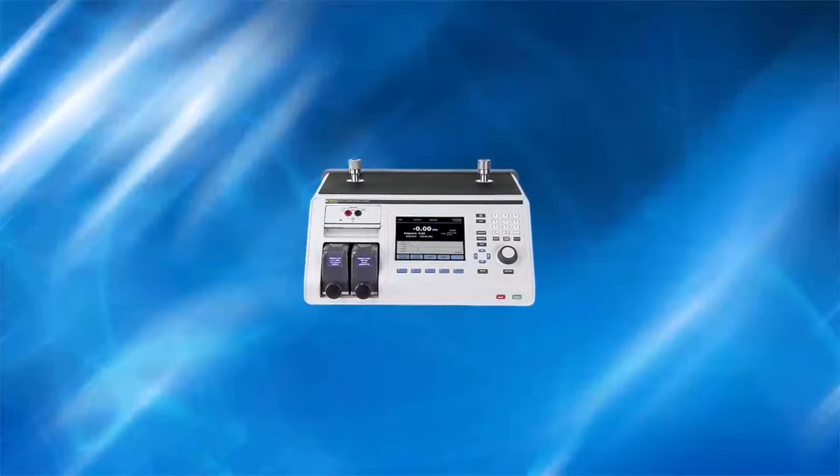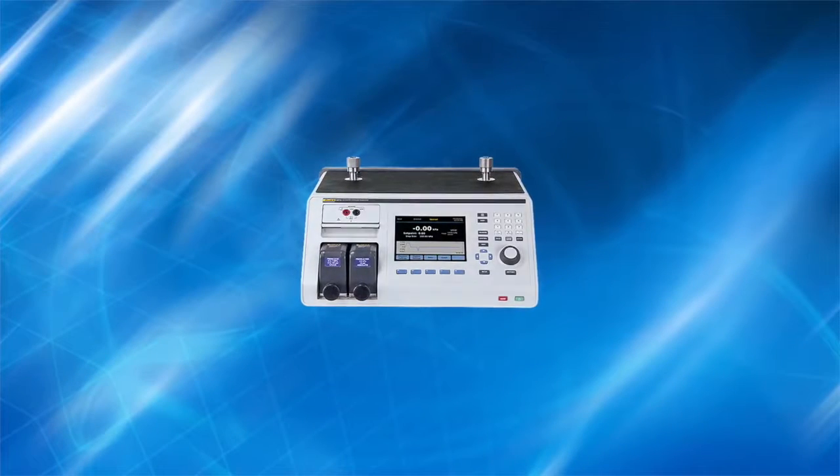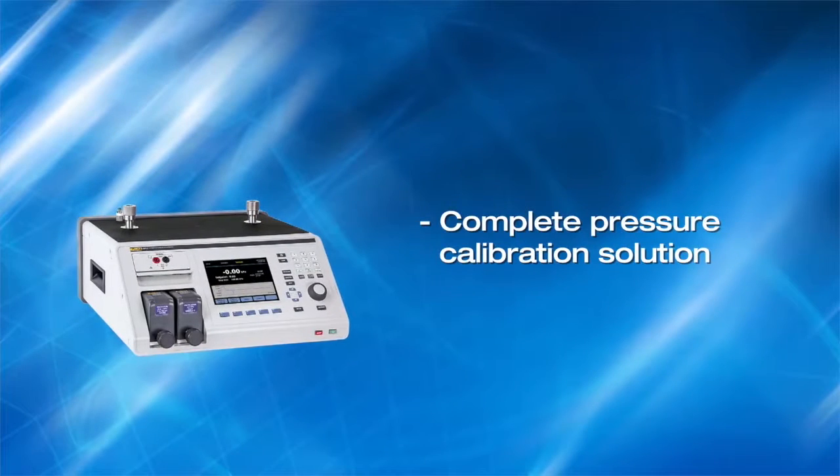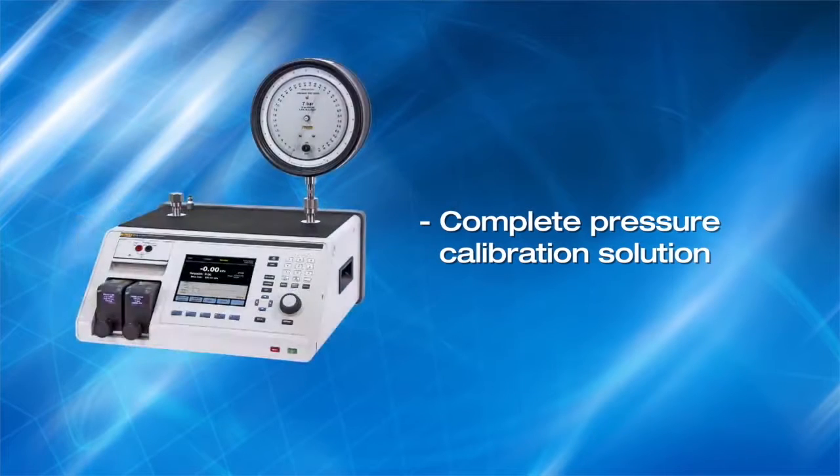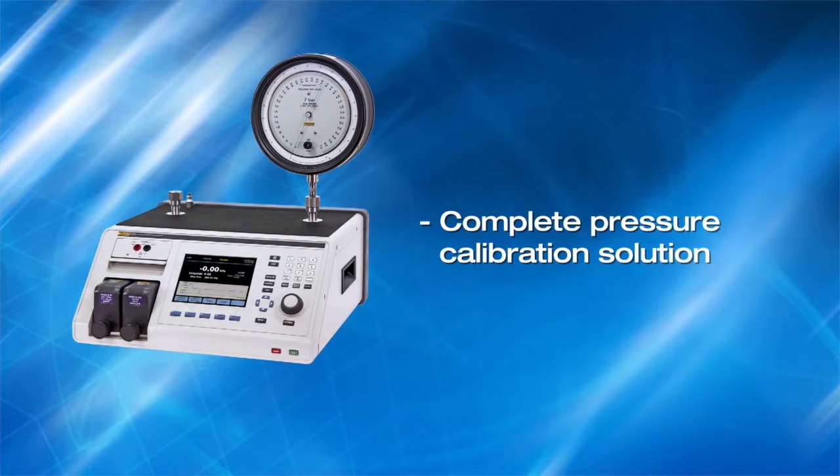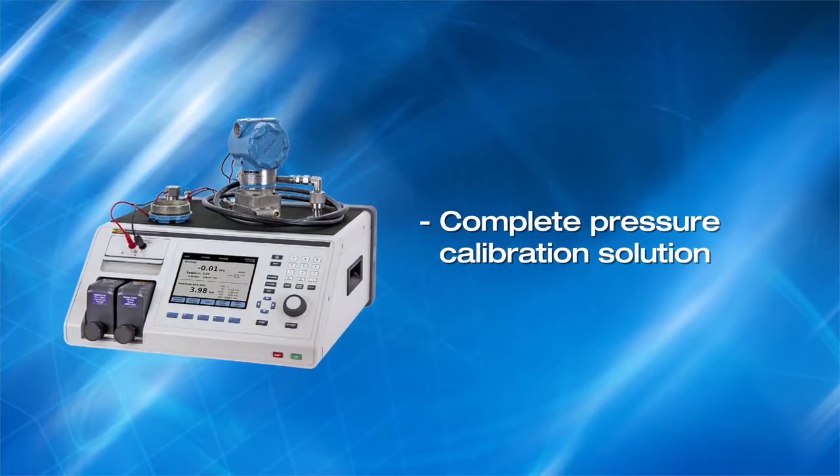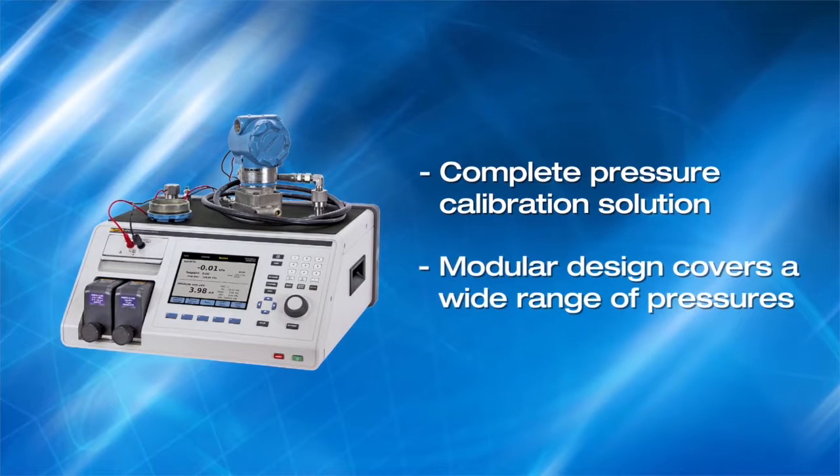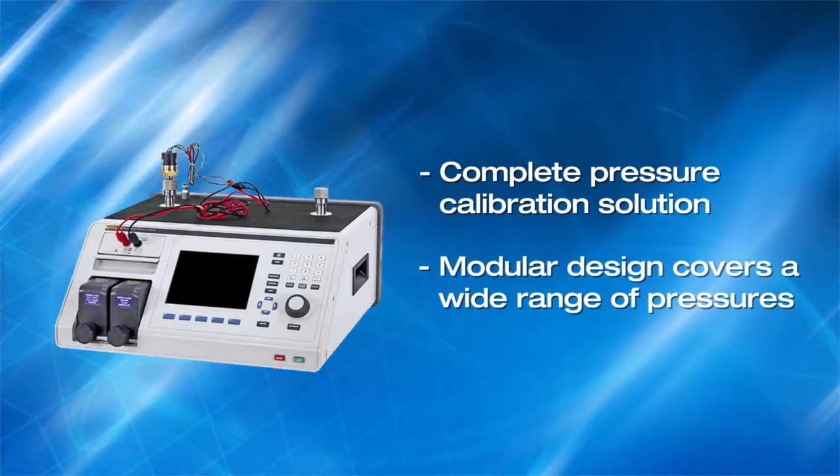The Fluke Calibration 2271A Industrial Pressure Calibrator is a complete solution for calibrating and testing pressure gauges, transmitters, and switches. Its modular design enables it to cover a wide range of pressures.